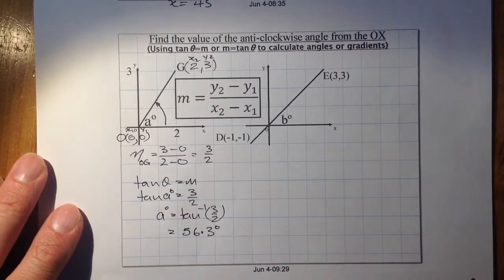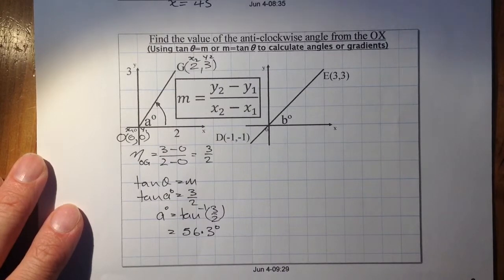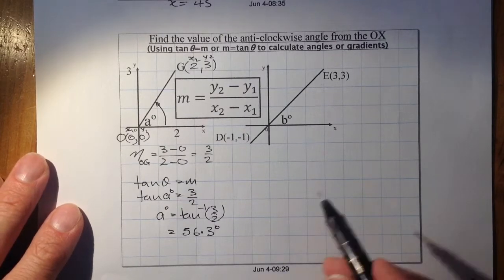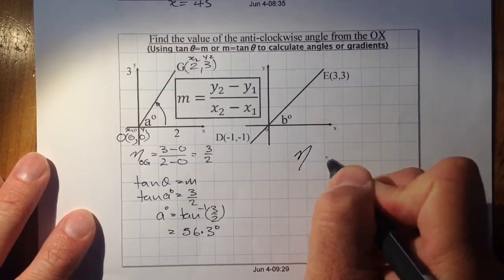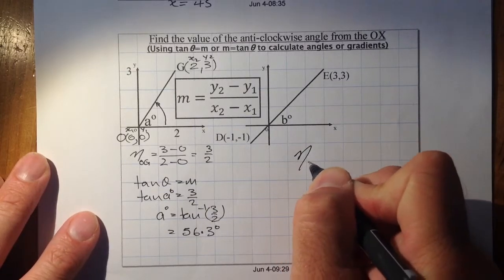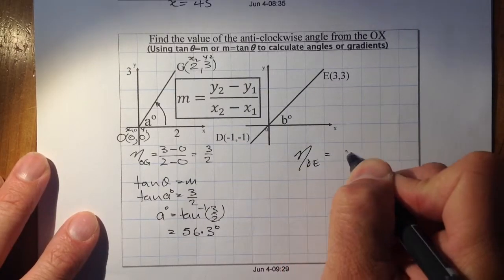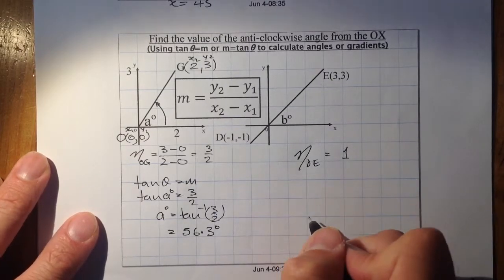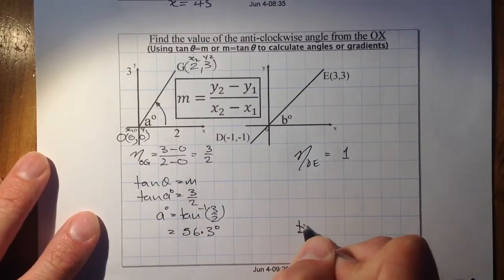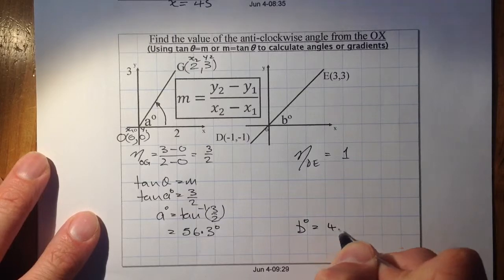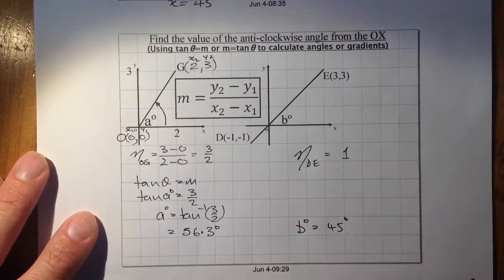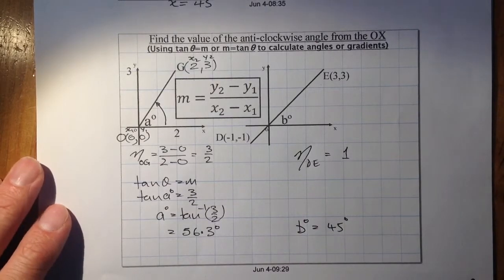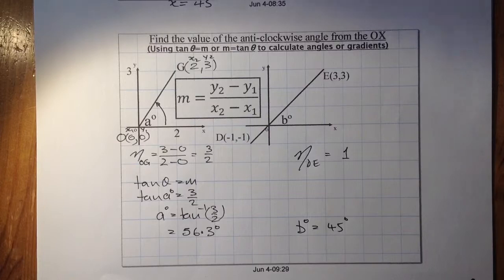I'll let you try the next one — freeze the video and go ahead. The gradient of line OE works out to be 1, and the value of angle b, once worked through, is equal to 45 degrees. That part is now complete.